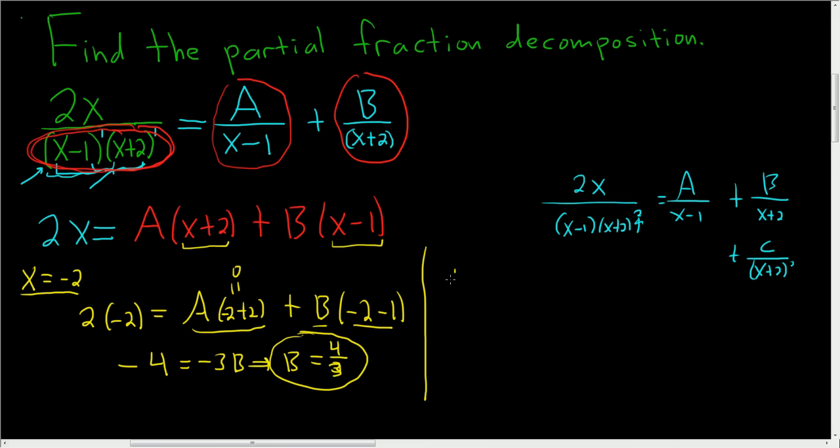All right, now we'll plug in 1. So x equals 1. So we get 2 times 1. Then here we get 1 plus 2, so we get 3, so 3A. And 1 minus 1 is 0, so this is just plus 0. Divide by 3, you get A equals 2 thirds.